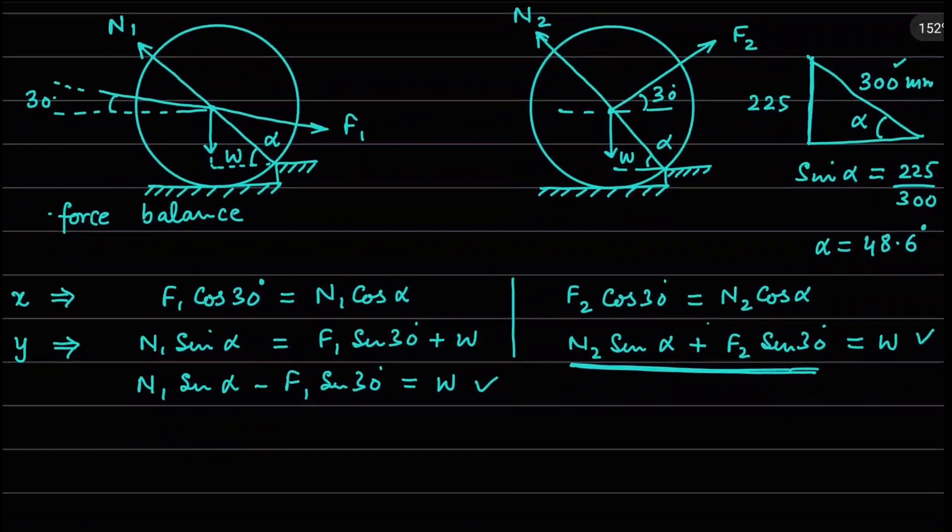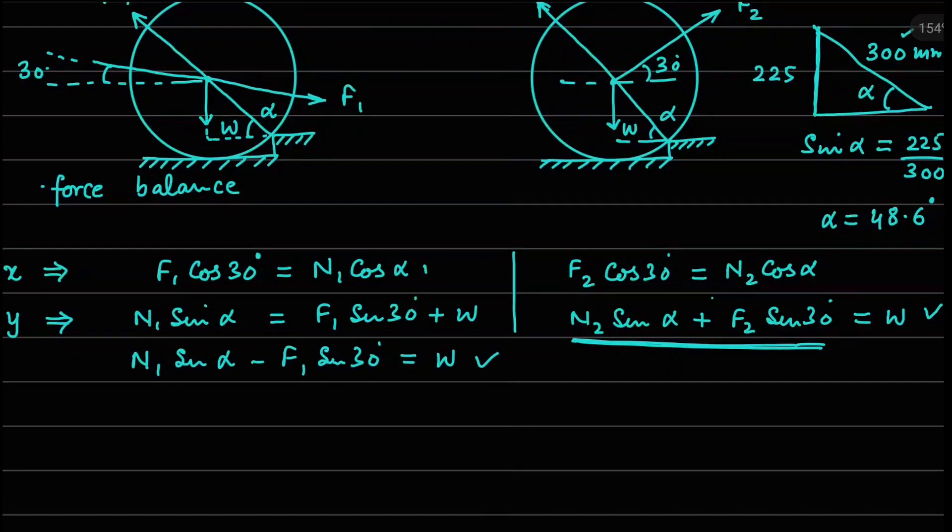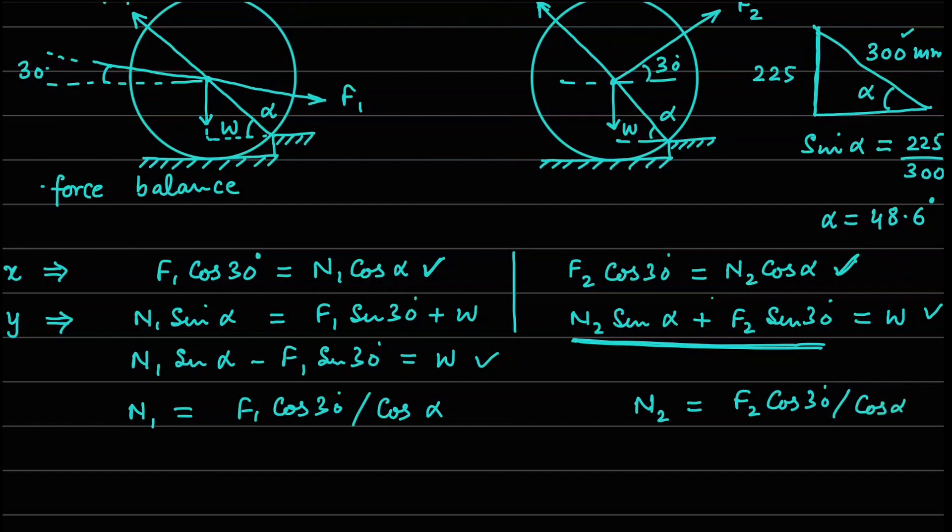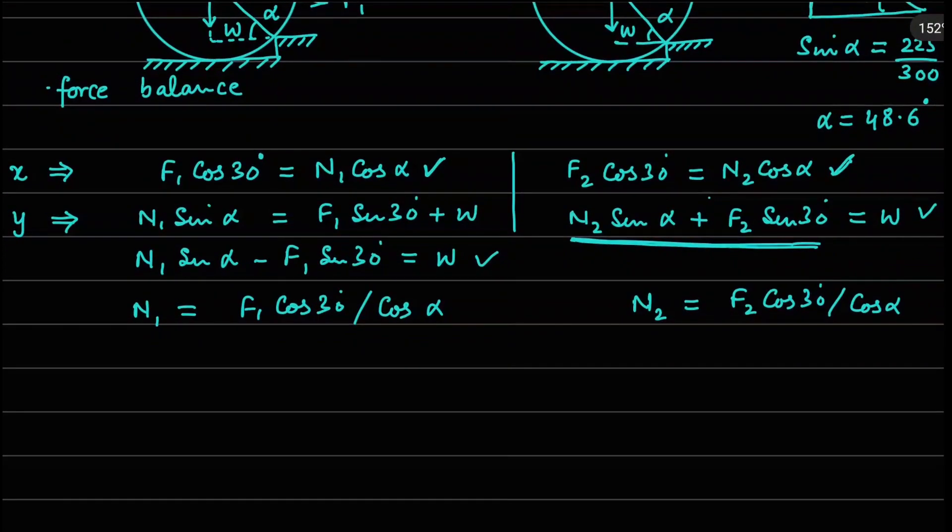Now when we start solving this, what we will do is from the first equations, which is this one and this one here, in the second equation we are going to replace the value of N1 coming from the first equation. So N1 is F1 cos 30 degrees divided by cos alpha here, and similarly your N2 is equals to F2 cos 30 degrees divided by cos alpha. Now when I substitute this in the second equation...